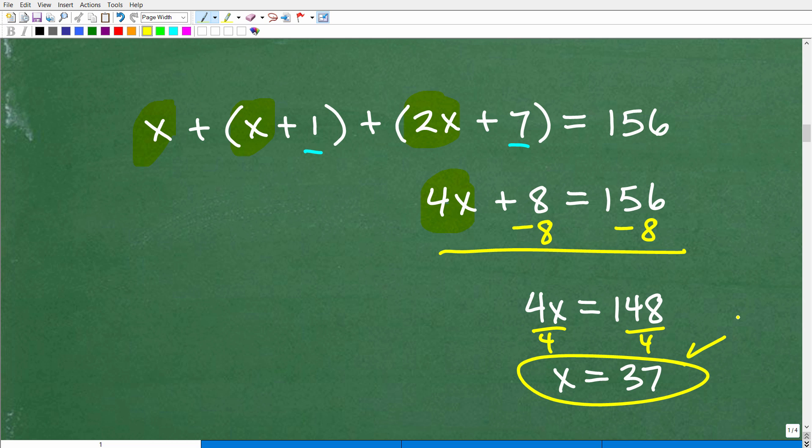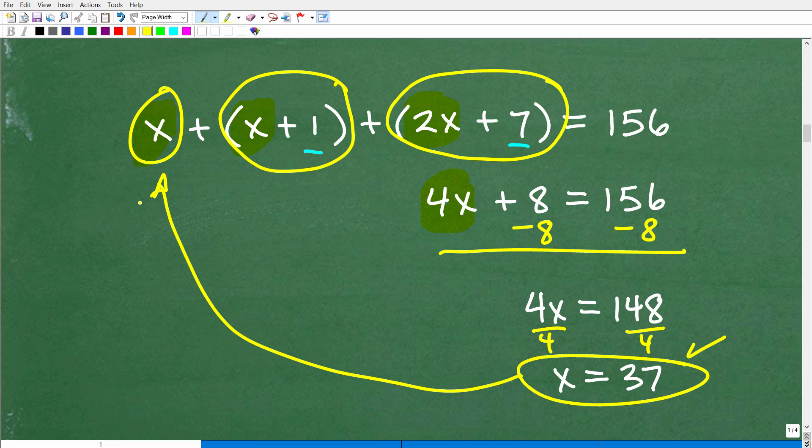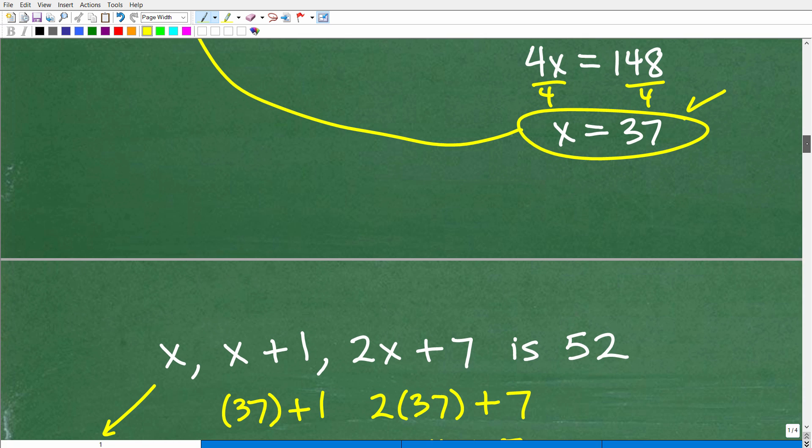Okay, so what does that mean, though? Well, remember, we have three numbers. One was x, the other was x plus 1, and the other number was 2x plus 7. So we just found our first number, 37. Okay, so that's one of the numbers. To get this number, it's just going to be 37 plus 1. That's 38. And then we can figure this out as well. So let me show you that work right now.